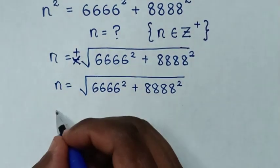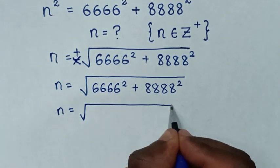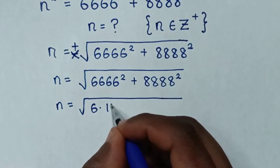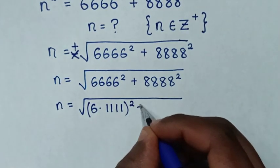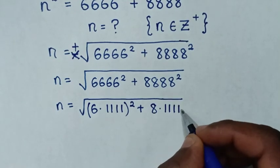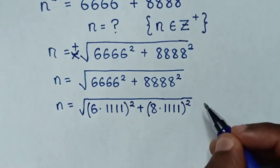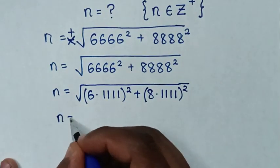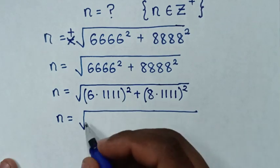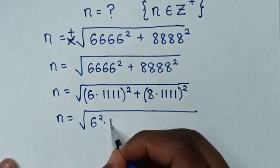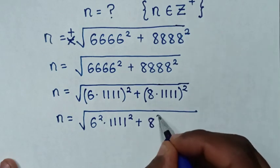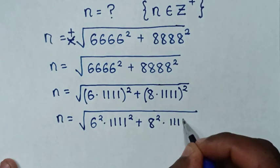In the next step, n is equal to the square root of: 6,666 squared is the same as (6 × 1,111) squared, plus 8,888 squared is the same as (8 × 1,111) squared. Expanding, this becomes 6 squared times 1,111 squared plus 8 squared times 1,111 squared.